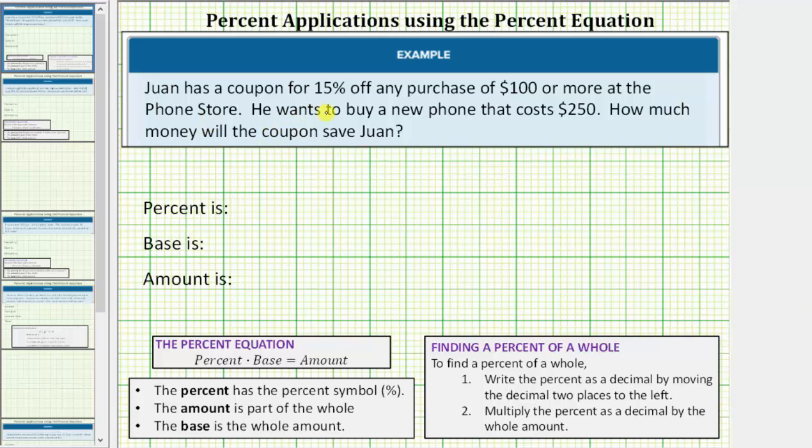Juan has a coupon for 15% off any purchase of $100 or more at the phone store. He wants to buy a new phone that costs $250. How much money will the coupon save Juan? Because the cost of the phone is $100 or more, Juan receives 15% off the purchase price of $250, which means to determine how much Juan will save, we need to determine what is 15% of $250.